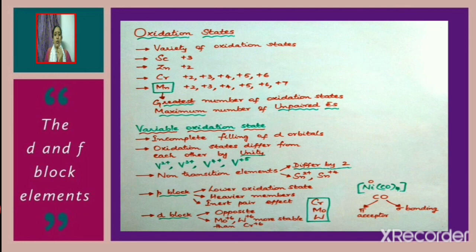The variable oxidation state in transition metals is due to the incomplete filling of d orbitals. We should also note that the oxidation states differ from each other by unity. For example, if we consider vanadium, the different oxidation states possible are V²⁺, V³⁺, V⁴⁺, and V⁵⁺, and here we find that the oxidation states differ from each other only by unity.